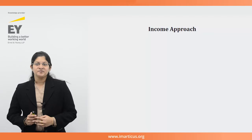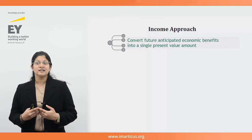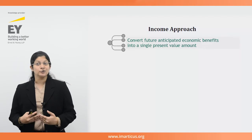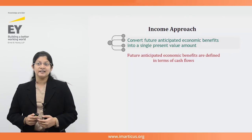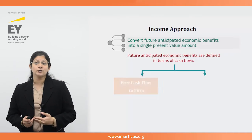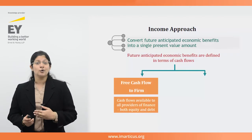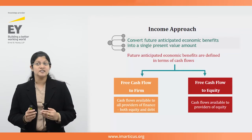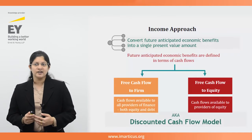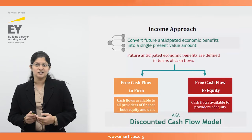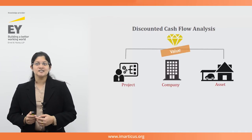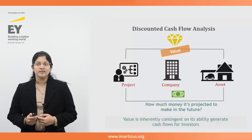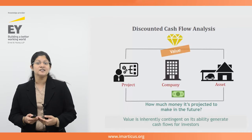The income approach involves valuation methods that convert future anticipated economic benefits in terms of cash flows into a single present value dollar amount. Depending on the method chosen, the cash flow used may be free cash flow to firm — cash flows available to all providers of finance, both equity and debt — or free cash flows to equity, i.e. cash flows available to equity providers after debt providers have been paid. Since this is a cash flow model, the approach is referred to as the discounted cash flow approach. In simple terms, DCF analysis attempts to value a project, company, or asset today based on how much money it is projected to make in the future, with the idea that value is inherently contingent on its ability to generate cash flows for investors.